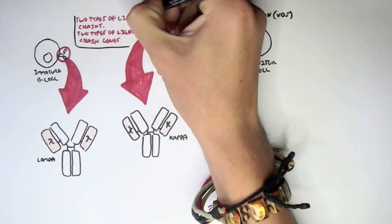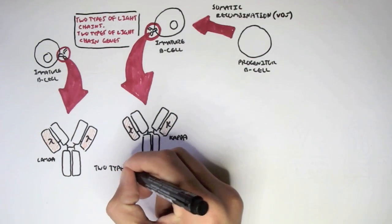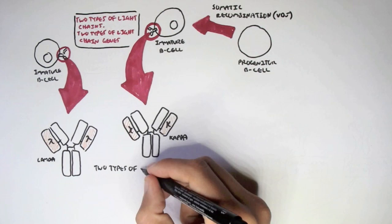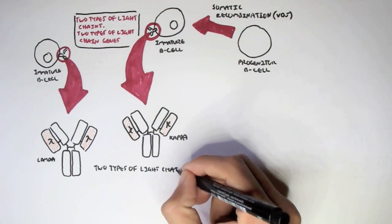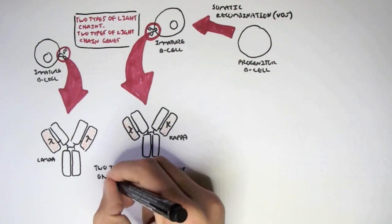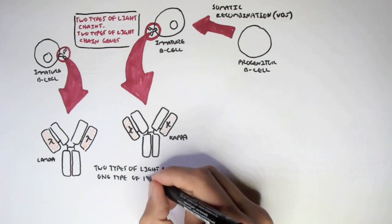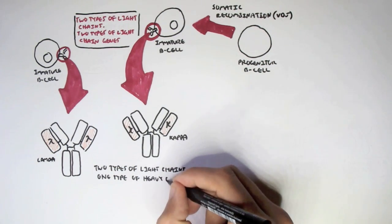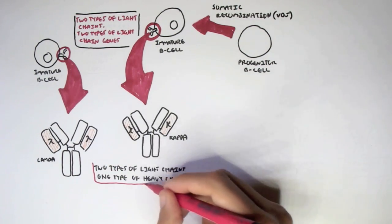Since there are two types of light chains, there are two types of light chain genes. However, there is only one type of heavy chain gene, which consists of many types of constant regions.